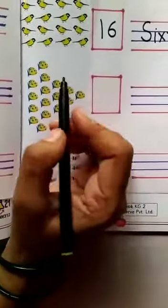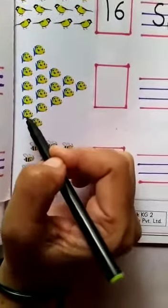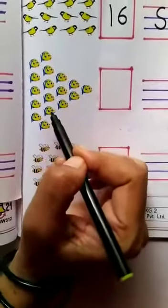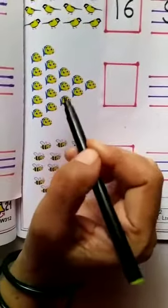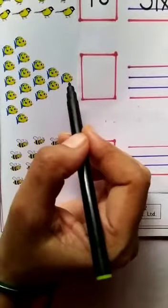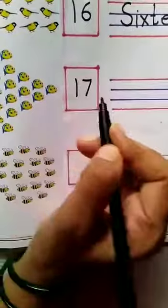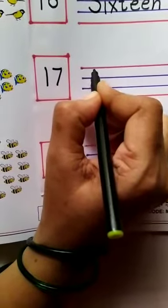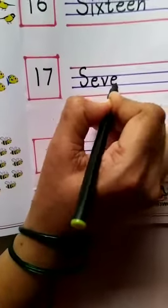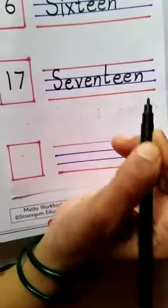Now the next one. 1, 2, 3, 4, 5, 6, 7, 8, 9, 10, 11, 12, 13, 14, 15, 16, 17. And here we will write the spelling: S, E, V, E, N, T, E, E, N. 17.